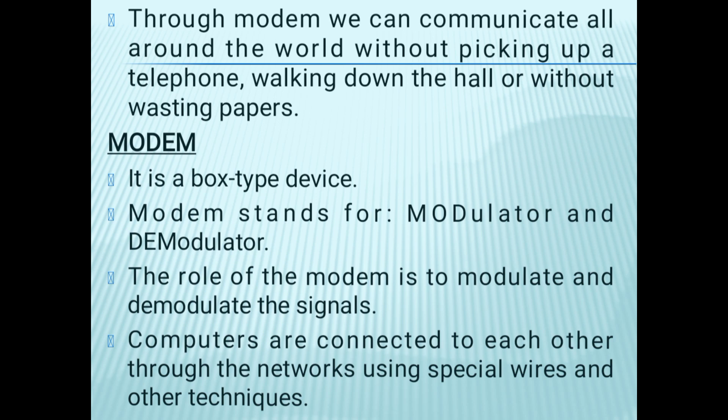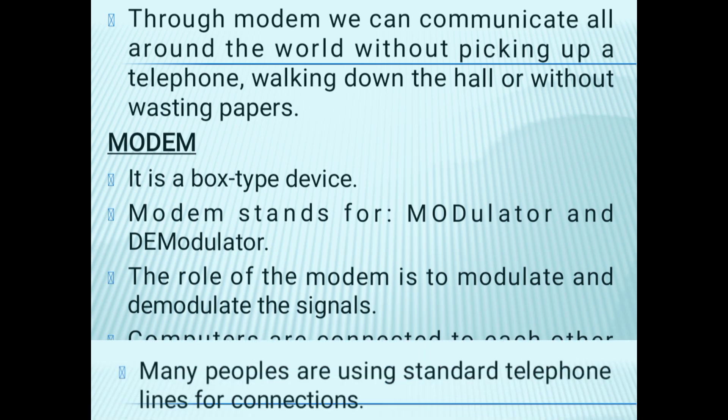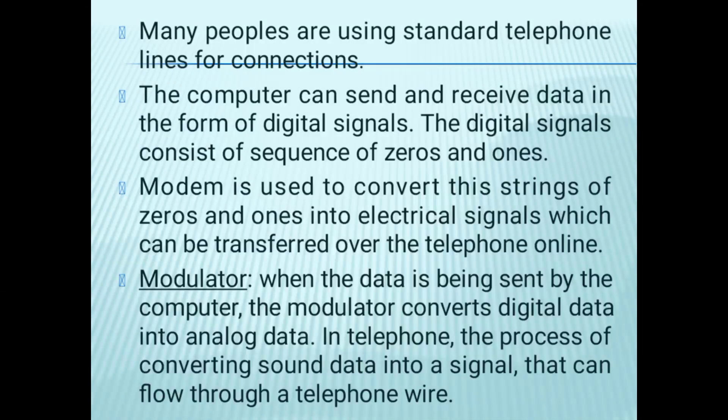Computers are connected to each other through networks using special wires and other techniques. Many people use standard telephone lines for connection. The computer can send and receive data in the form of digital signals, which consist of a sequence of zeros and ones.